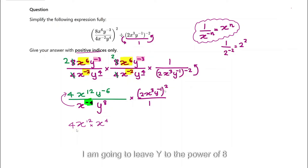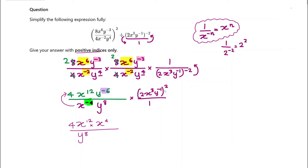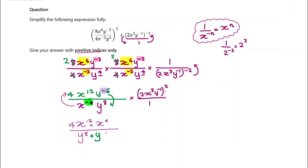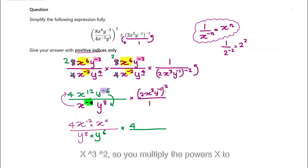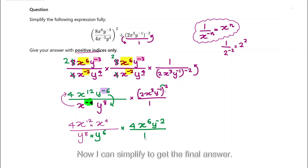I'm going to leave y to the power of 8 in the denominator, but the negative 6 needs to be made positive — so I move it down, giving multiplied by y to the power of 6. Now applying the square to the second expression: 2 squared is 4, x cubed squared means multiplying the powers — x to the power of 6 — and y to the power of negative 1 times 2 gives y to the power of negative 2.